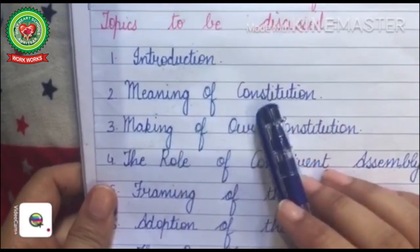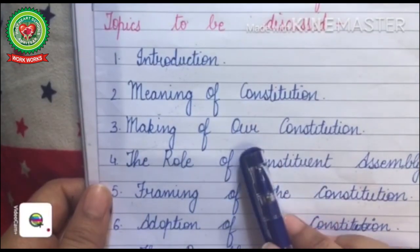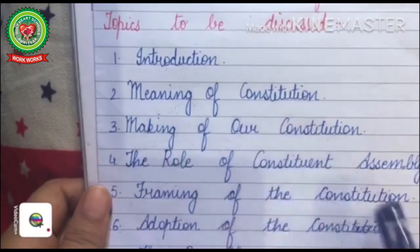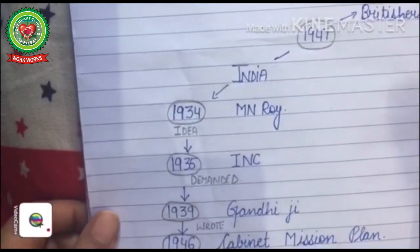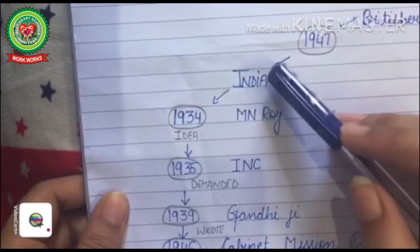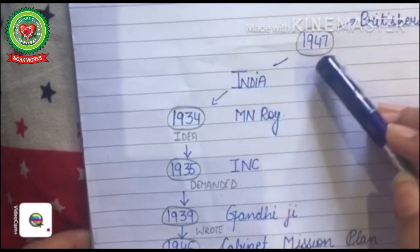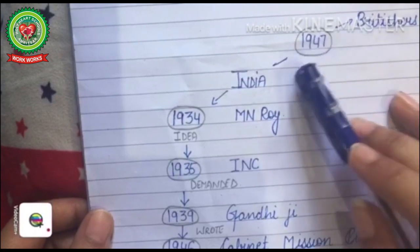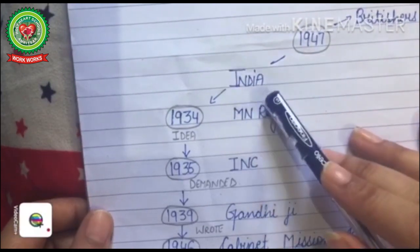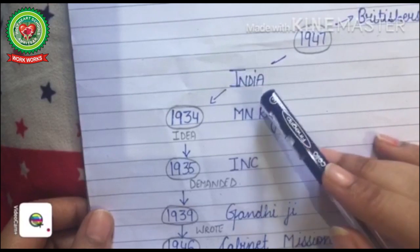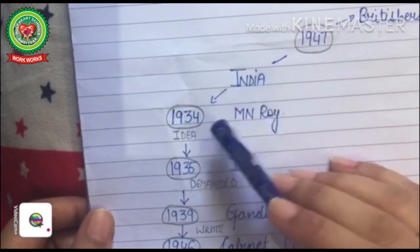Yesterday we covered the introduction and meaning of the Constitution. Today we will start with the making of our Constitution. Here we have the mind map of the making of our Constitution. India got independence in 1947. Before that, the British were ruling over India, and Indians followed rules and regulations made by the British. But after 1947, Indians followed the rules written in their own Constitution — though it was not an instant action.